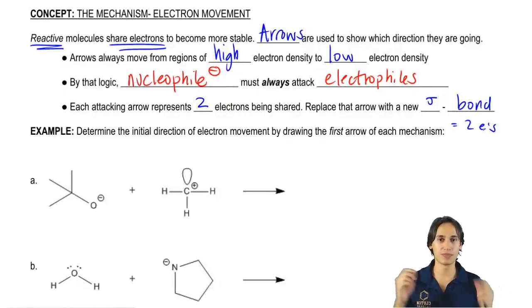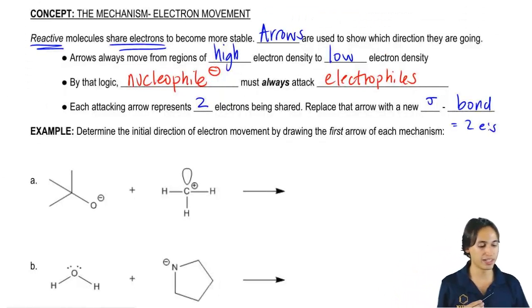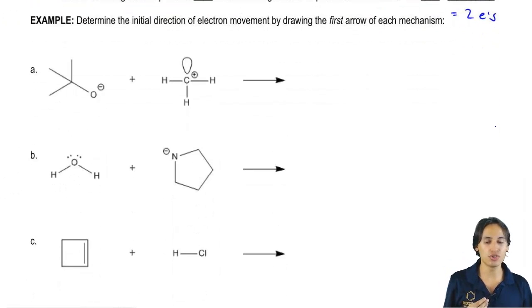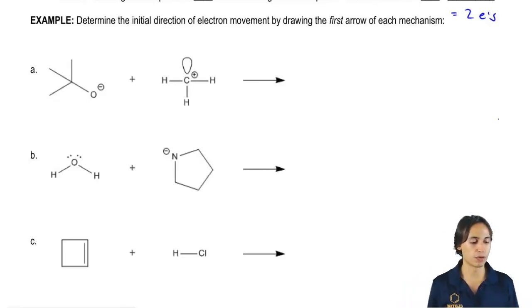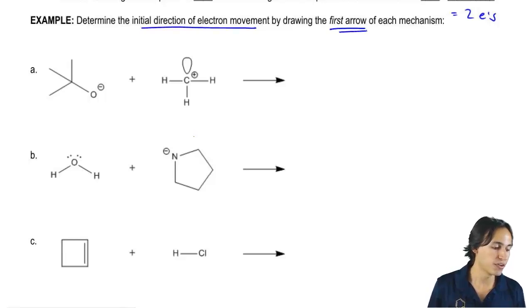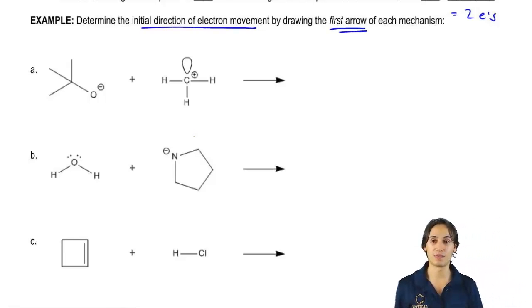I know it's a lot of words, so let's just go ahead and get started. So what I want you guys to do for these reactions is I know that you don't even know what these molecules are really, but we do understand nucleophiles and we do understand electrophiles. And we also understand how electrons move now. We kind of know. So what I want you guys to do first of all is determine the initial direction of electron movement by drawing the very first arrow of each mechanism. Even though we don't know what's going on here, it's okay because you can just follow the general rule of nucleophile and electrophile.